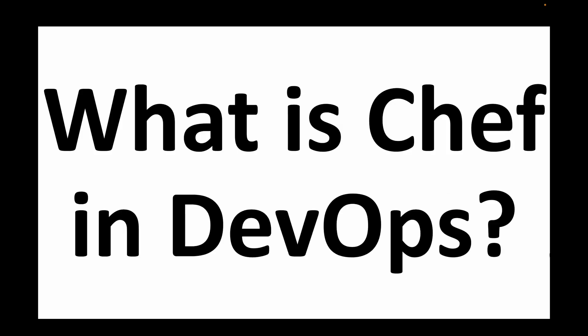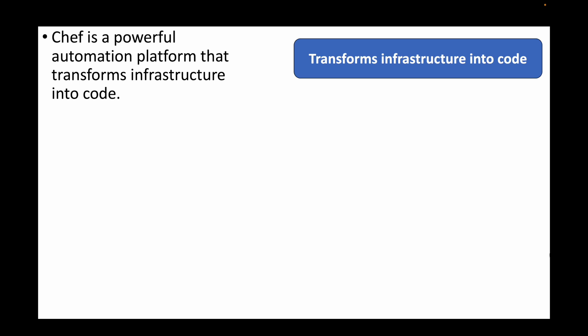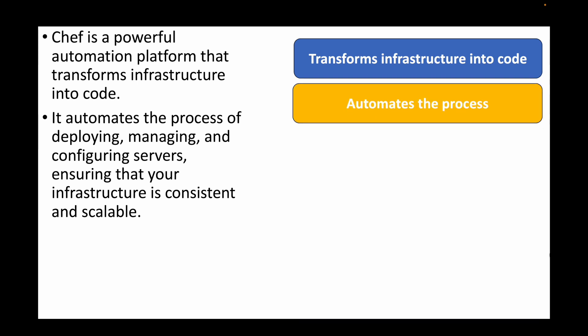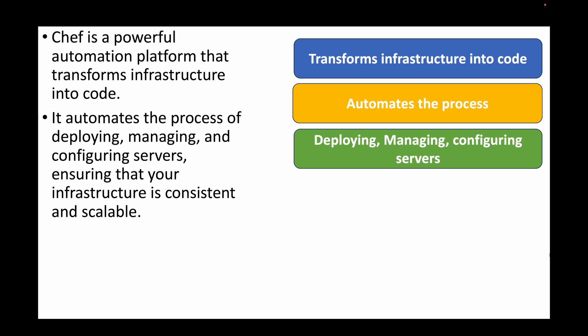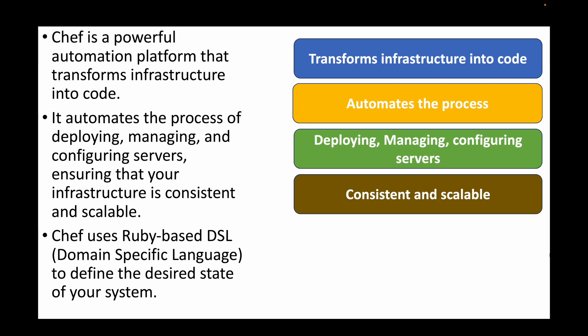The first question is: what is Chef? Chef is essentially an automation tool which can be used to transform your infrastructure by making use of code — working with remote machines, installing packages. Chef is similar to Ansible; it's a configuration management tool that can be used to manage configurations of remote machines. It can automate deploying to remote machines, managing them, and maintaining their configurations, ensuring your infrastructure is consistent and scalable.